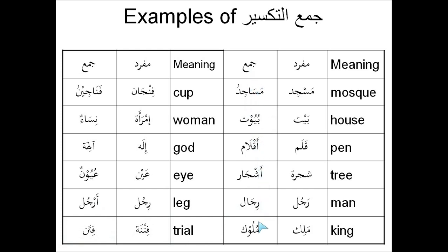So these are all examples of Jam' at-Takseer words. You can see there is a huge variety of patterns and ways of forming the Jam' at-Takseer. There are complicated rules that tell you which types of words tend to form which types of plurals, but rather than memorizing those rules, it's probably much easier to memorize the actual singular and plural together. As time goes on, you will internally develop an idea of what type of plural a word forms, especially the more you read and listen to good Arabic speakers.